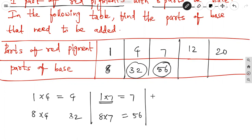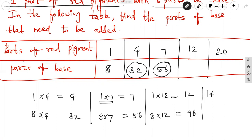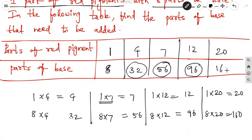For 12 parts of red pigment, multiply 8 by 12 to get 96 parts of base. For 20 parts of red pigment, multiply 8 by 20 to get 160 parts of base. So the missing values in the table are 32, 56, 96, and 160. The ratios are all equal (1:8), confirming that the mixing of color and base is in direct proportion.